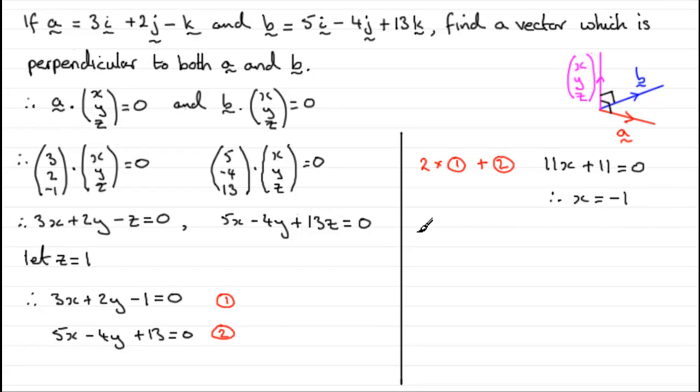Substitute x equals minus 1 back into one of the equations. Let's say we sub it back into equation 1. Sub x equals minus 1 into equation 1, and that gives us minus 3, minus this one, that's minus 4, plus 2y equals 0. So, we've got minus 4 plus 2y equals 0. If we rearrange this, we've got 2y equals 4, and divide by 2 leaves us with y equaling 2.